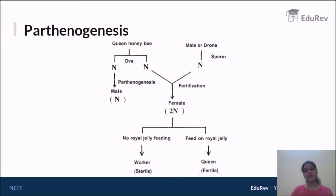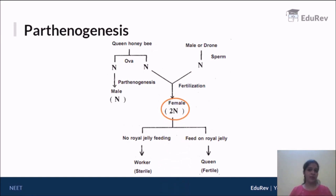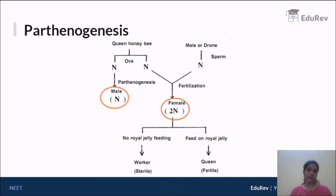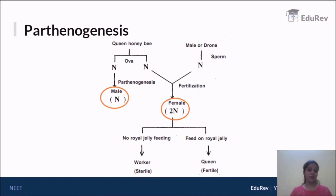One important takeaway: in honeybees, the females are always diploid, whereas the males are always haploid. A further understanding of parthenogenesis will come in the later videos, but I hope you have understood the concept of parthenogenesis for now.